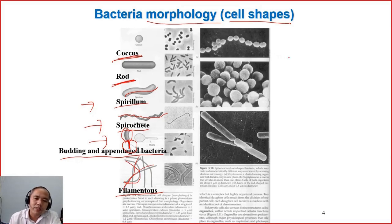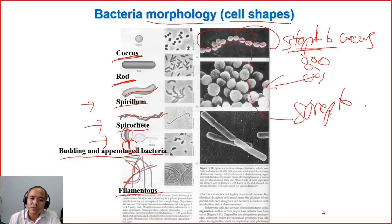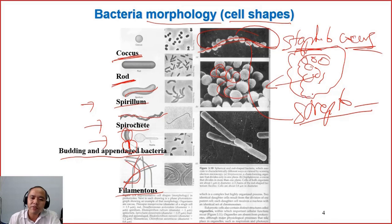For example, if we have staphylococcus, the cells are clustered together like grapes. And if they are arranged in a chain, we call it streptococcus. So they are both coccus, but streptococcus are in a chain and staphylococcus are linked together in a cluster like a bunch of grapes.